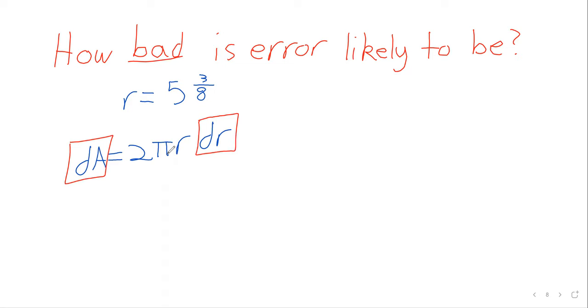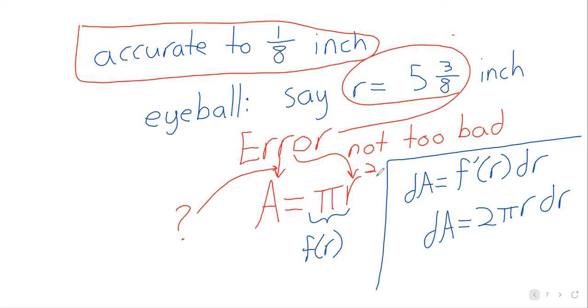And once you've taken the derivative and set this up, the differential becomes very plug and chug. Here's what I think the radius is. I think it's 5 and 3 eighths of an inch. This dr, remember, is the measurement error. And I think that this ruler is accurate to an eighth of an inch. So I'm going to put that in as my maximum measurement error.